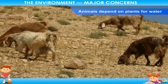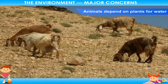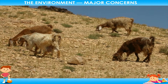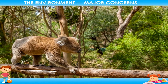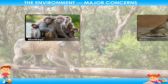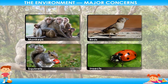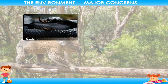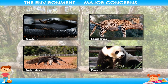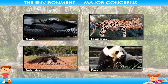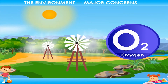Animals depend on plants for water. In the desert, there is no water but animals quench their thirst by eating plants. Animals also depend on plants for shelter. Animals such as monkeys, birds, squirrels, and different kinds of insects make plants and trees their shelter homes. Snakes, leopards, ant-eaters, and pandas also find shelter on the branches of forest trees. Plants also provide oxygen for animals and other living beings.